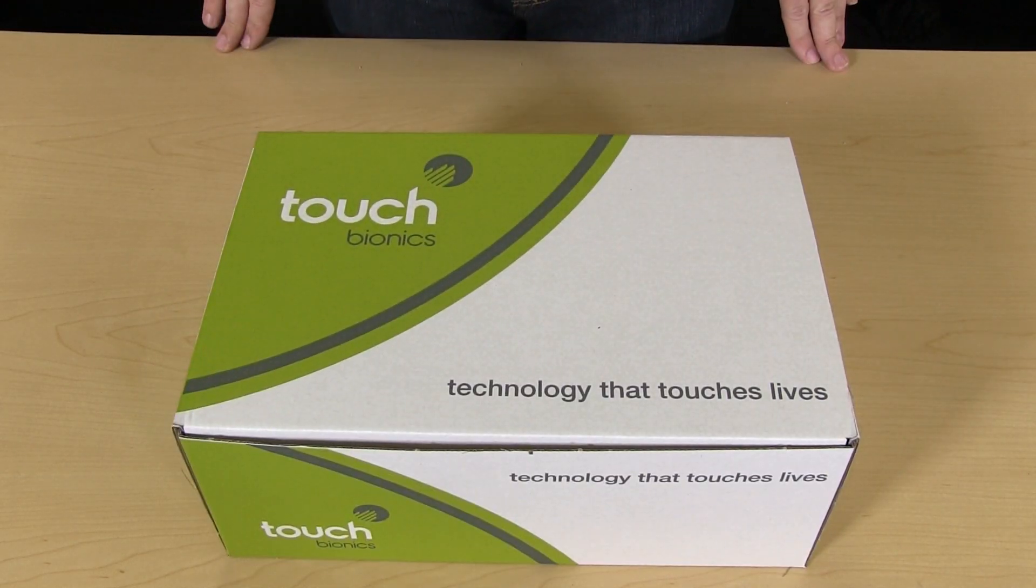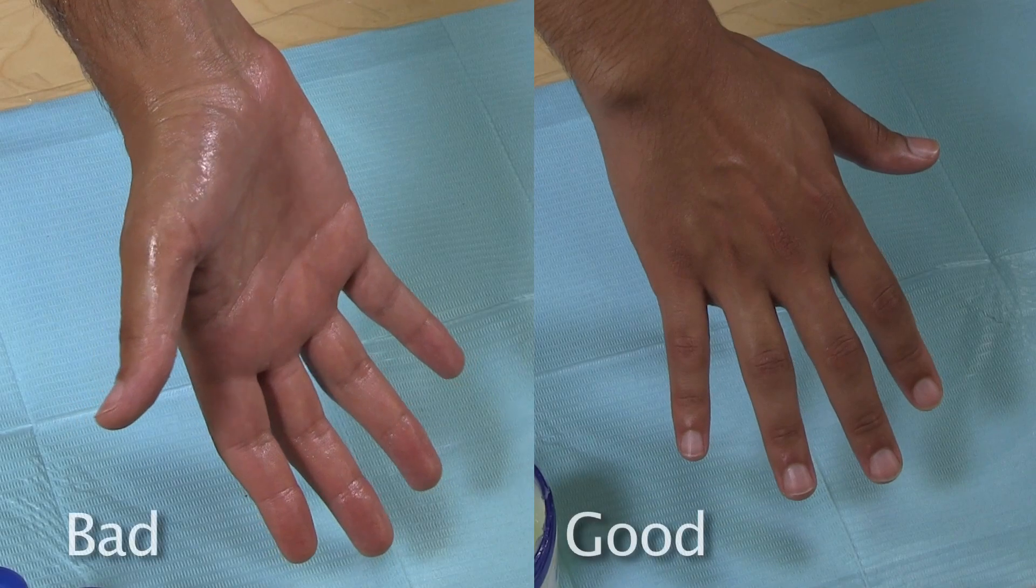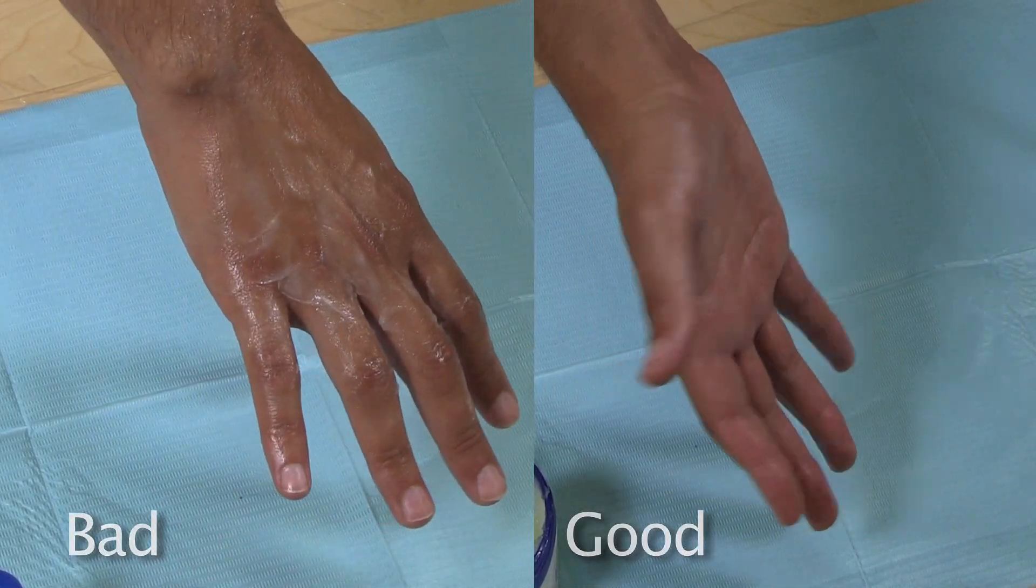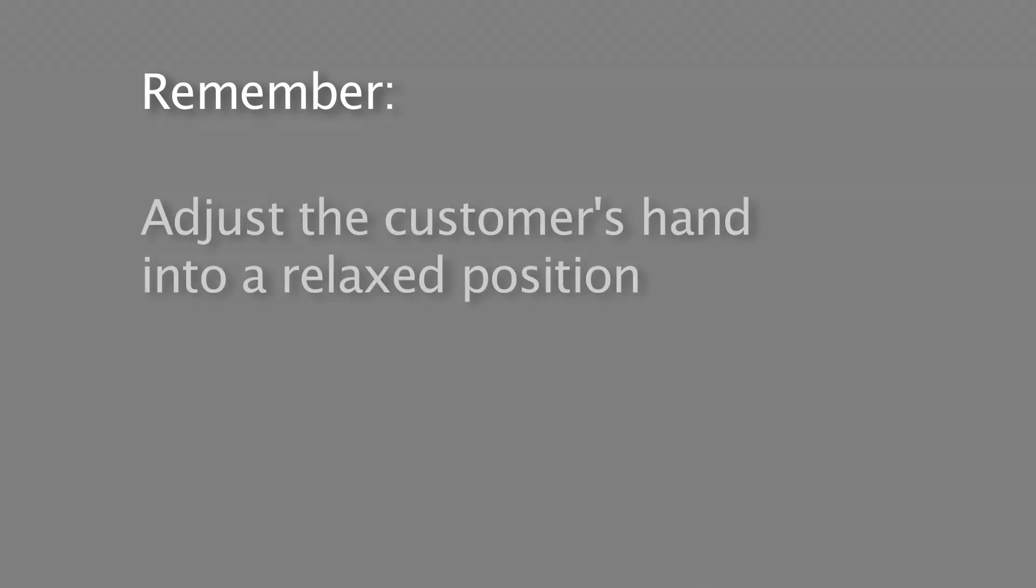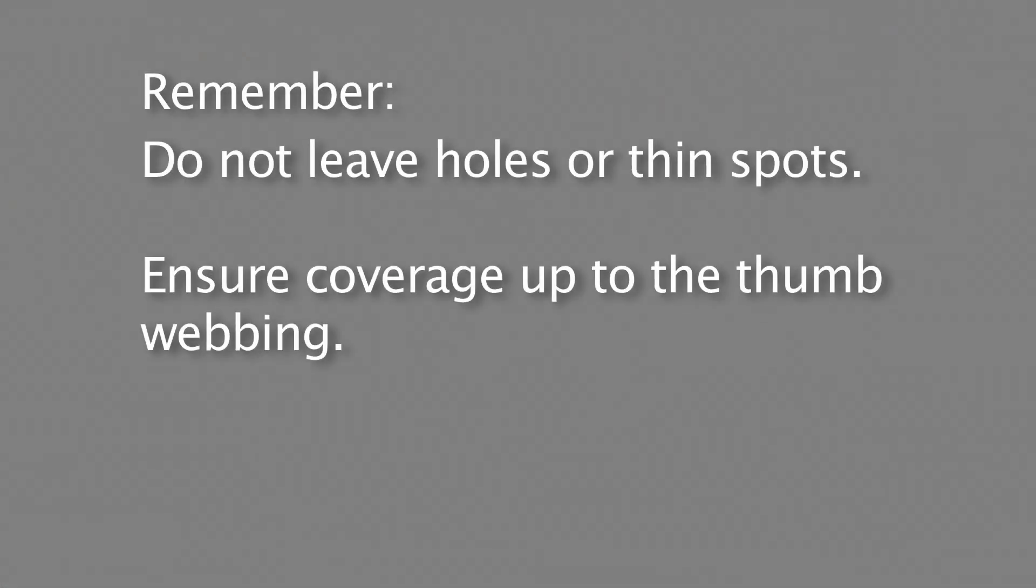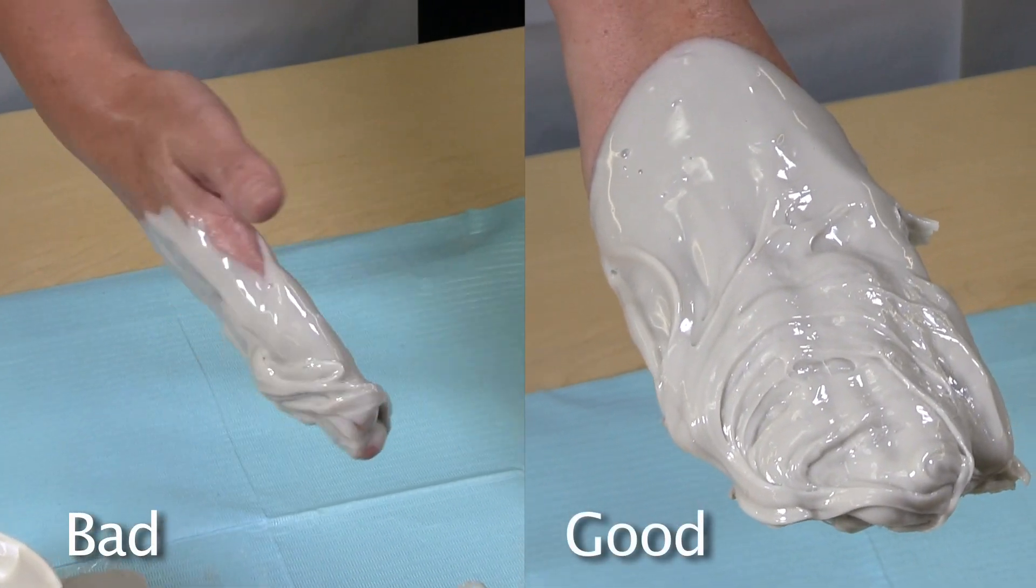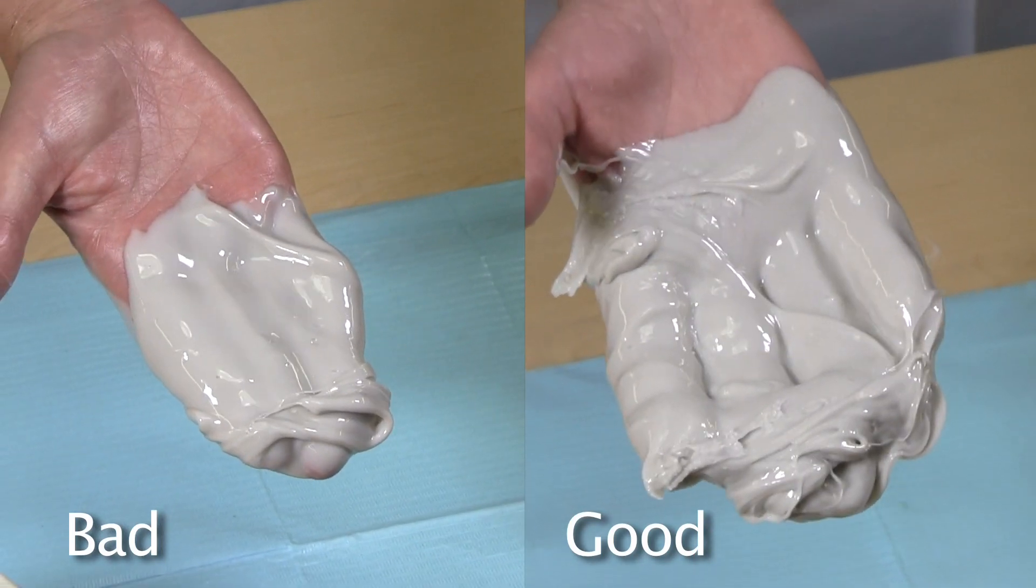Thanks for watching this video. Here are some helpful reminders. Do not apply excess Vaseline. Pose the customer's hand in a relaxed position with slight spacing in between the fingers. Do not splay the fingers or strain the hand. Apply the impression material evenly to avoid holes or thin spots. Apply impression material up to the thumb webbing to avoid an impression which is too short.